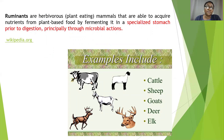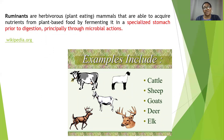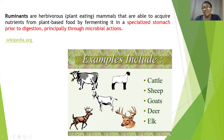Ruminant animals are herbivores — plant-eating mammals — that are able to acquire nutrients from plant-based food by fermenting it in a specialized stomach prior to digestion, principally through a cycle of microbial action. So we are referring to a class of animals that mainly eat plants and have a specialized system of digestion that allows the use of microbial organisms in the digestion process. This definition is from Wikipedia.